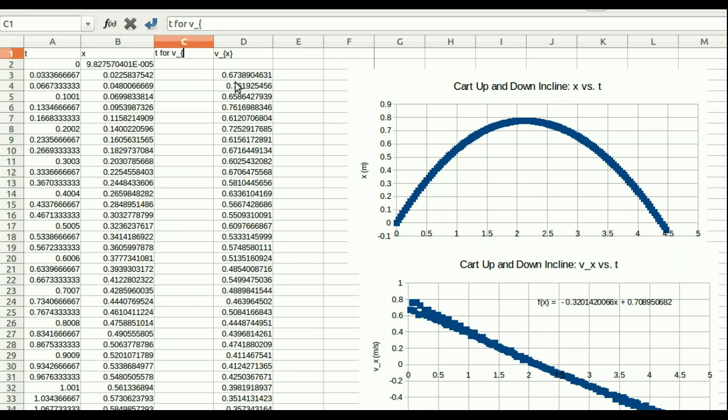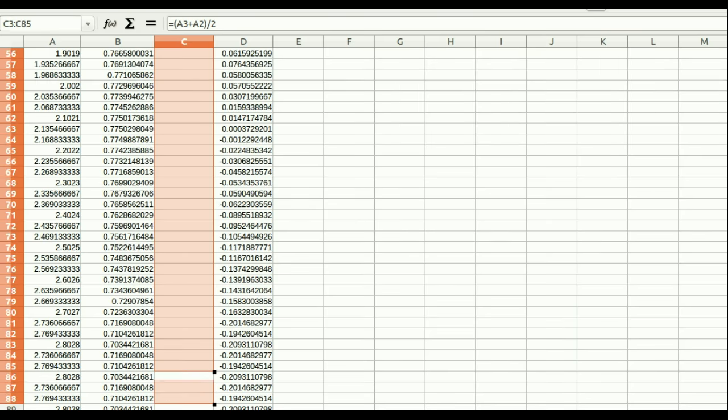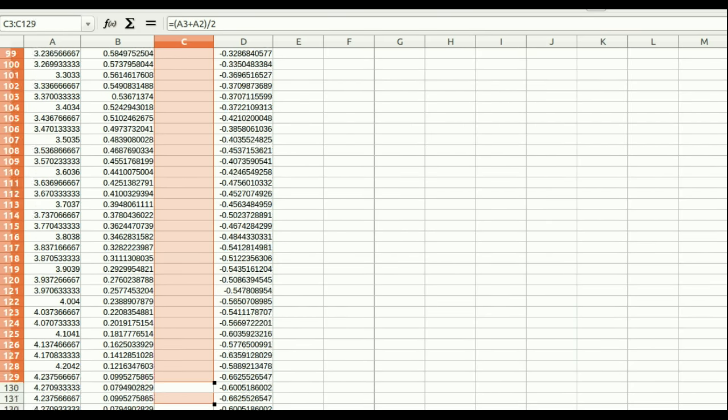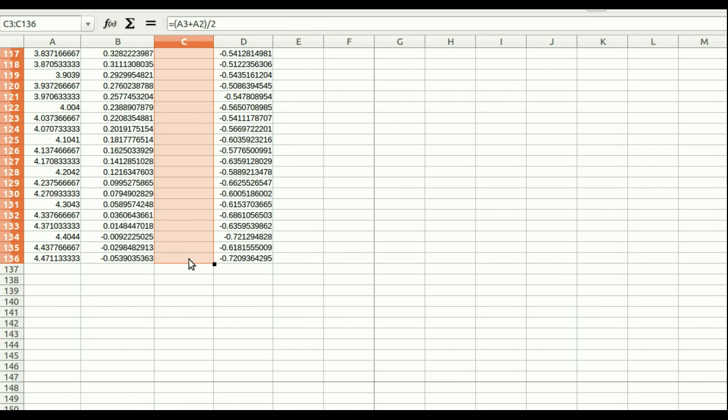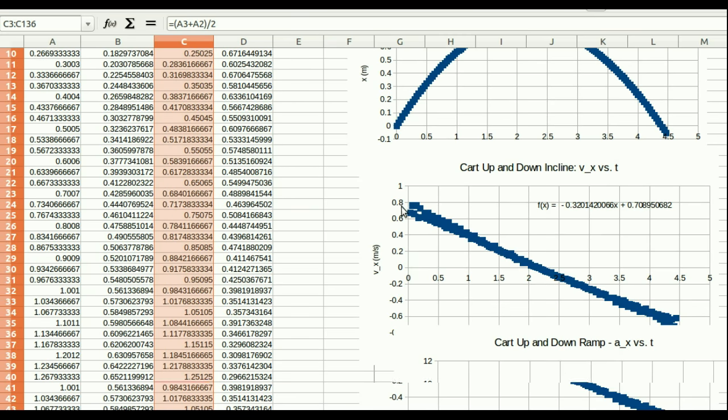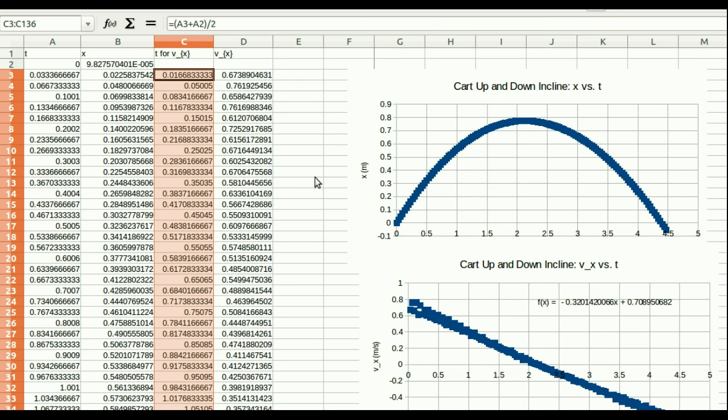And so, this one is going to be found by taking the point halfway, or the time halfway between these two, which I can just get by averaging them. And so on. So, that gives me a new time column, which I use for the v's. I could re-plot the v's, but all it's going to do is shift everything ever so slightly to the left on the v versus t plot.